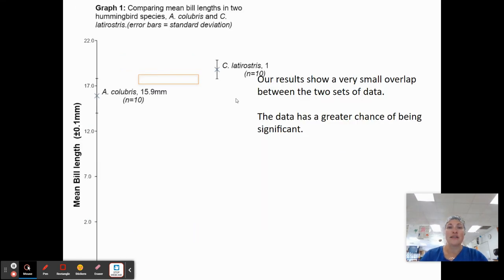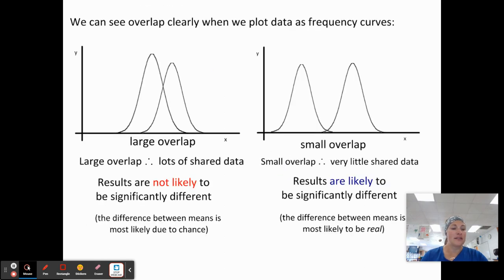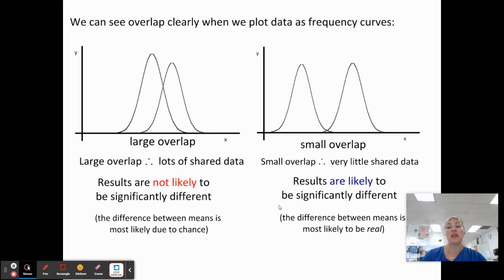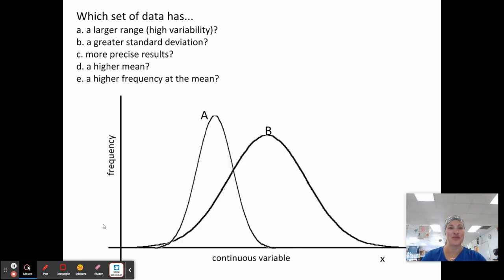Here we have results showing a very small overlap in our data sets. We can also clearly see this overlap if we plot them as frequency curves. Here we have a large overlap of our two data points — the mean is in the center and the spreads represent standard deviation. If they have a small overlap, the middle points are the mean and those spreads are the standard deviation — and those results are more likely to be statistically different.